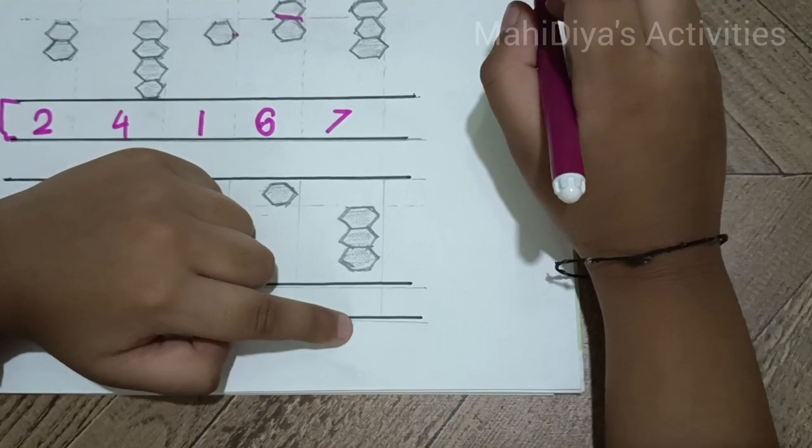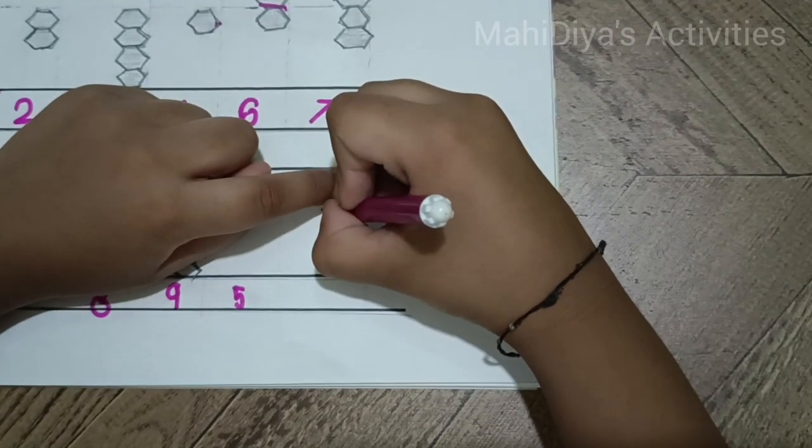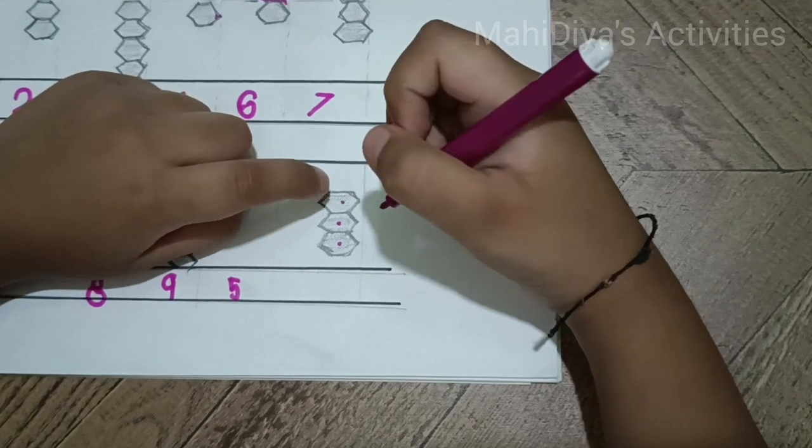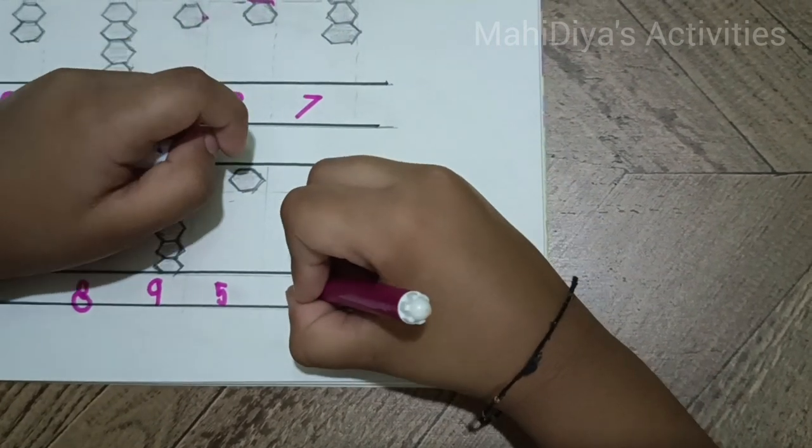See here, 1, 2, 3. You see these little dots, that is 3 dots. So it is 3.